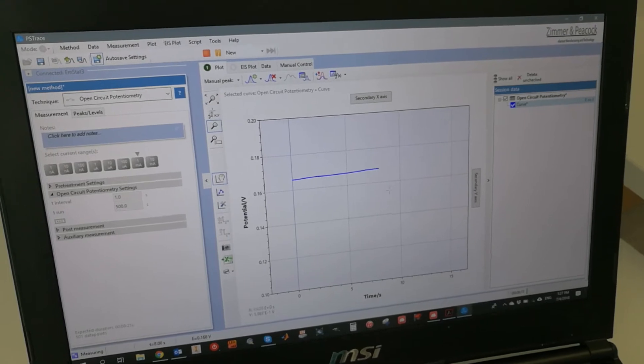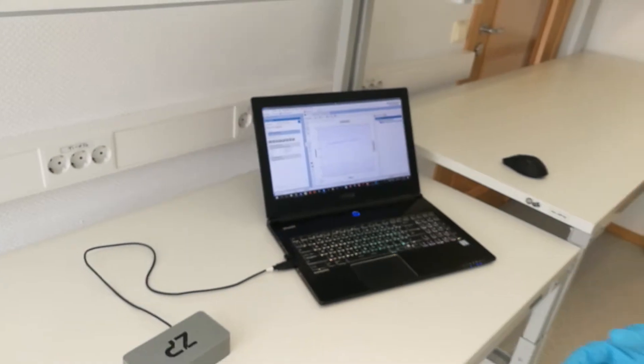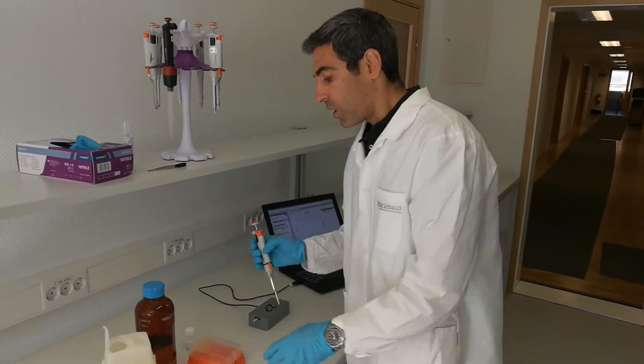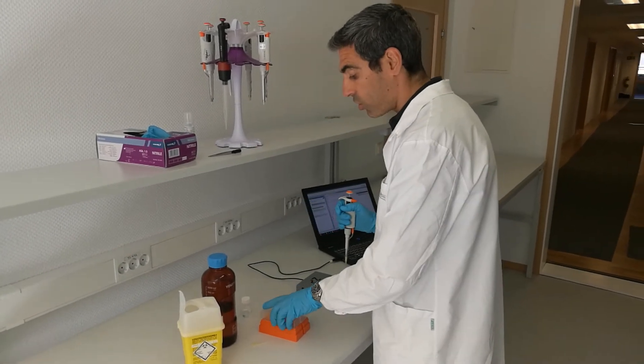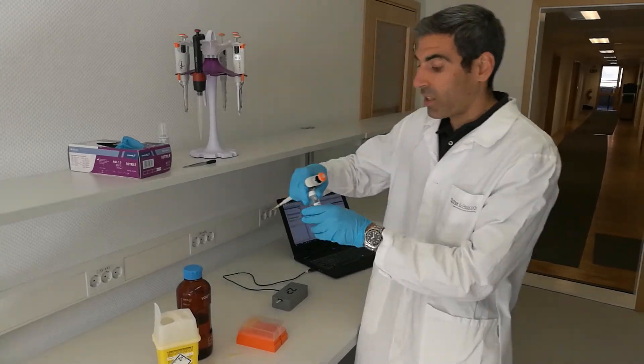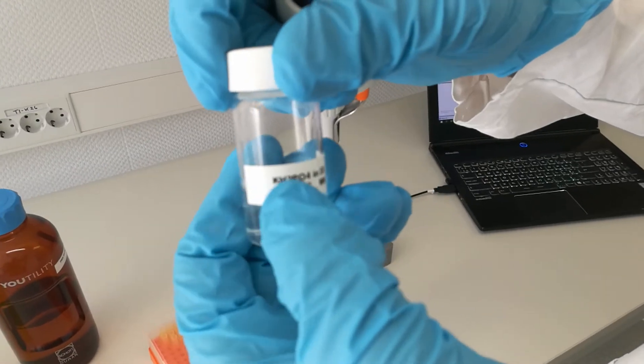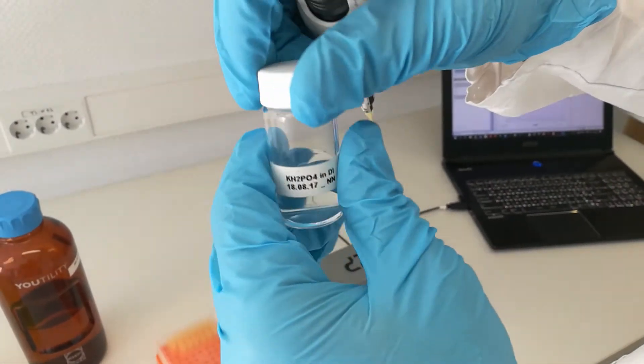What I'm going to do now - since we don't want to add chloride, because this sensor is basically based on the principle of the Nernst equation, and a change in the chloride concentration will actually change our potential - we're going to add a solution that is chloride-free. In this case, potassium dehydrogen phosphate in water, one molar solution.